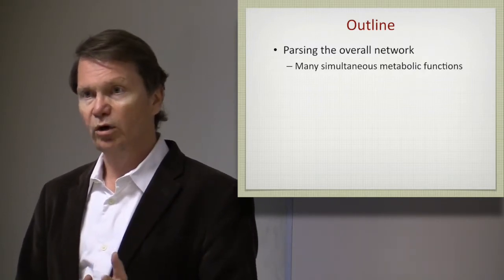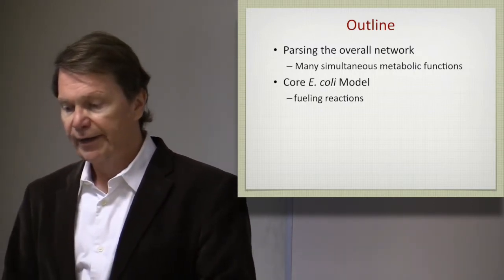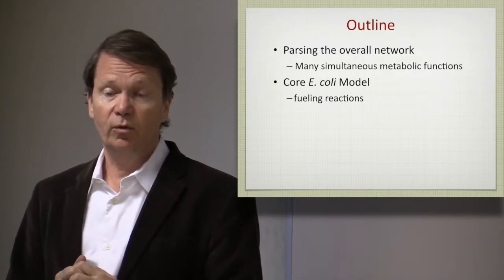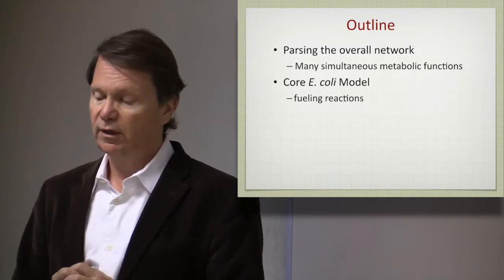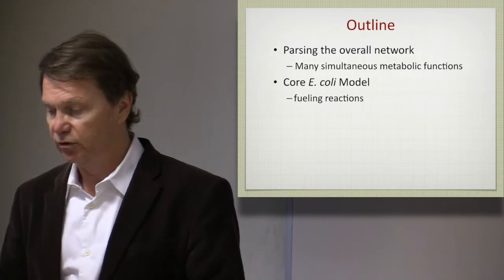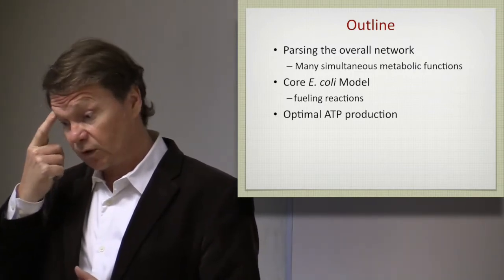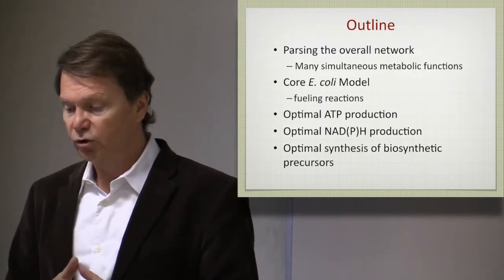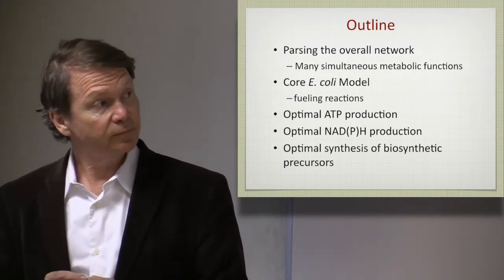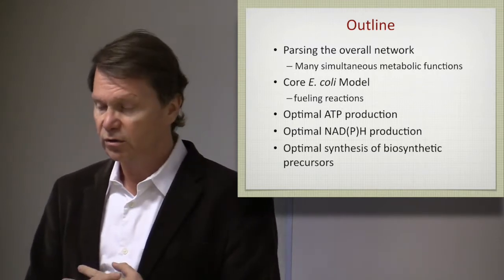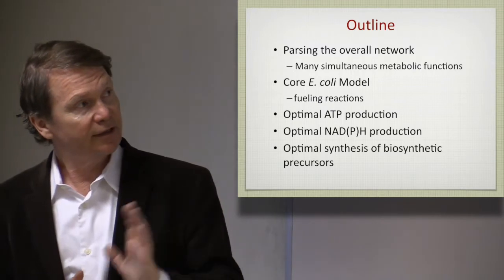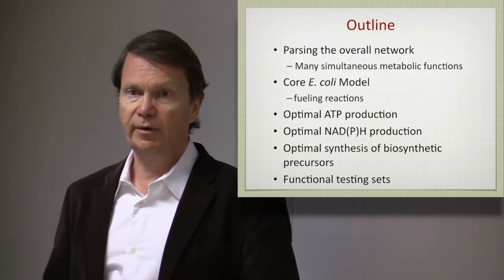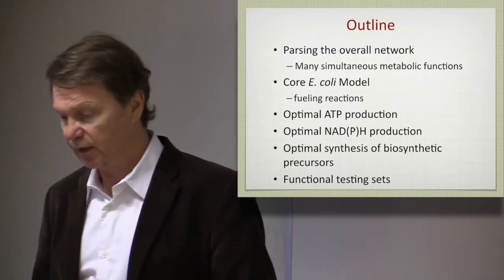You can have objective functions that just calculate one objective, or you can combine them. As in other parts of these lectures, we talk about that core model of E. coli, and I'll introduce you a little more to its origin here. The reactions it's comprised of are collectively called the fueling reactions in the older literature. Then we look at a couple of specific optimal solutions and how to understand them. One of the favorites is to calculate ATP production from a substrate. We'll also talk about NADH production, synthesis of key biosynthetic precursors—there are 12 of them—and capacity determination of a network as a way to functionally test and debug it as it's being reconstructed.